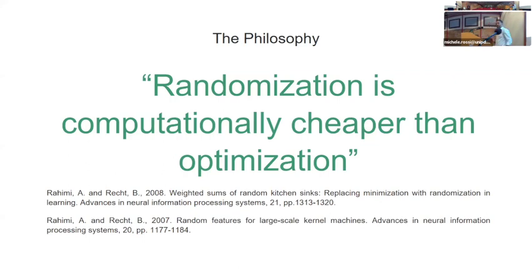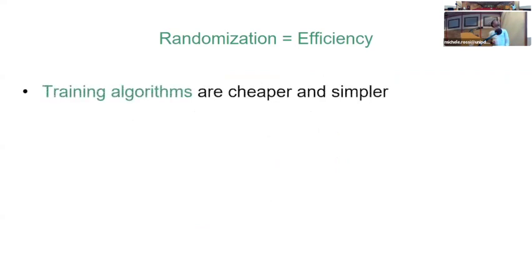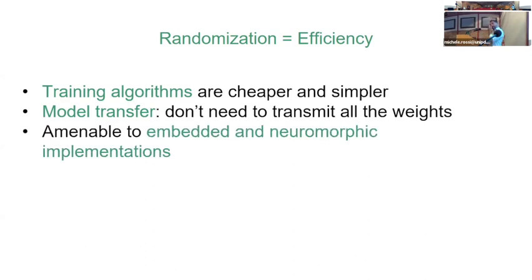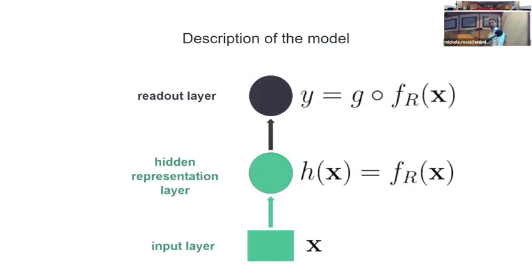Randomization is efficient because we train fewer parts of the neural network — training a linear model is much simpler than a non-linear one, with exact solutions available rather than iterative ones. In terms of computational or communication complexity, you don't need to transfer much: a large portion of the model is fixed, and only the small trainable parameters need to be communicated. This also makes the approach amenable to embedded systems or dedicated hardware like neuromorphic devices, which we'll discuss in tomorrow's lecture.